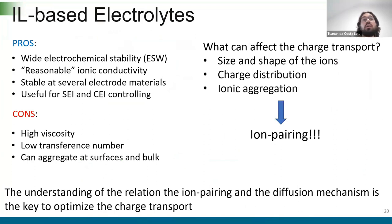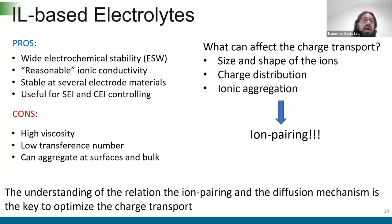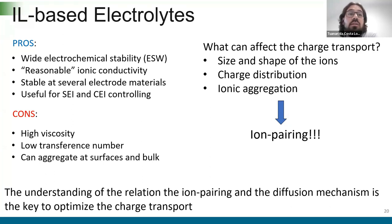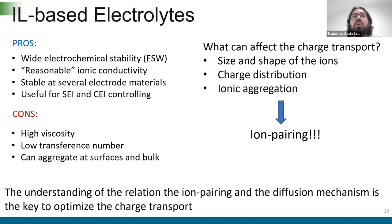Why do we choose ionic liquid-based electrolytes? As mentioned, ionic liquids have wide electrochemical stability, meaning we can work at high working potentials in batteries — making them great candidates for large-scale applications. They also have reasonable ionic conductivity and are stable at several electrode materials, forming stable solid electrolyte interfaces and cathode electrolyte interfaces. However, ionic liquids have high viscosity that hinders dynamics — leading to low transference numbers and low ionic conductivity — and they can aggregate both in the bulk and at the surface. So we need to think about how to control this ion pairing.